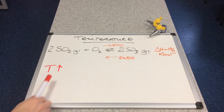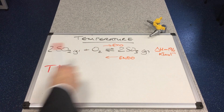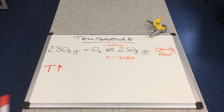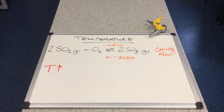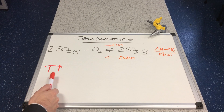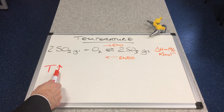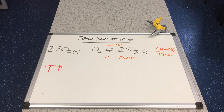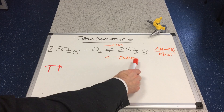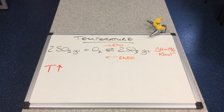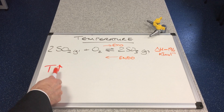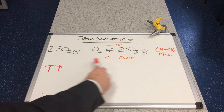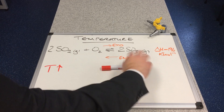Suppose we increase the temperature once dynamic equilibrium is established. Le Chatelier's principle says the equilibrium will move to minimise the change. If you heat it up, it wants to cancel that effect out by absorbing the extra heat. The reaction that can do that is the endothermic reaction, which absorbs heat from the surroundings. So increasing the temperature favours the endothermic direction and the equilibrium shifts to the left.